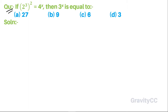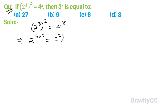Given that 2 to the power cube to the power 2 is equal to 4 to the power x, this implies 2 to the power 3 into 2, plus 2 to the power 2, to the power x. So 2 to the power 6 is equal to 2 to the power 2x, therefore 6 equals 2x.